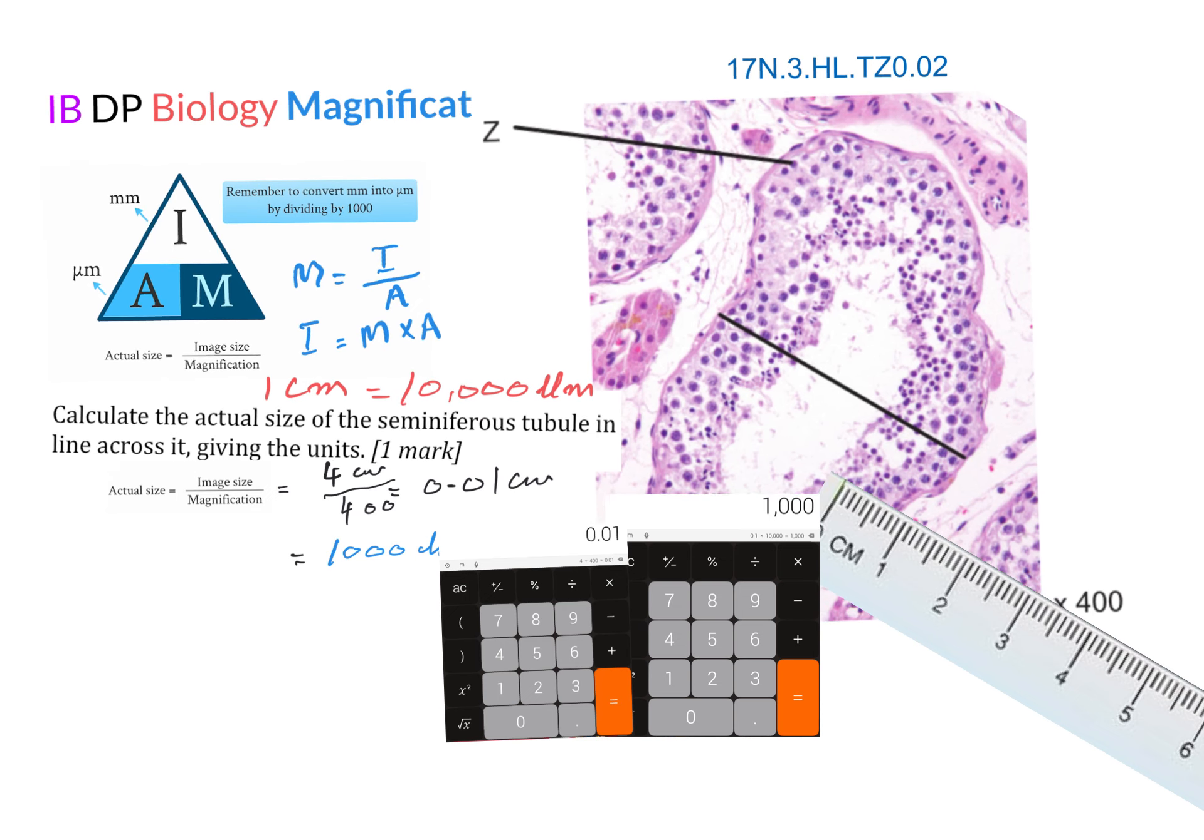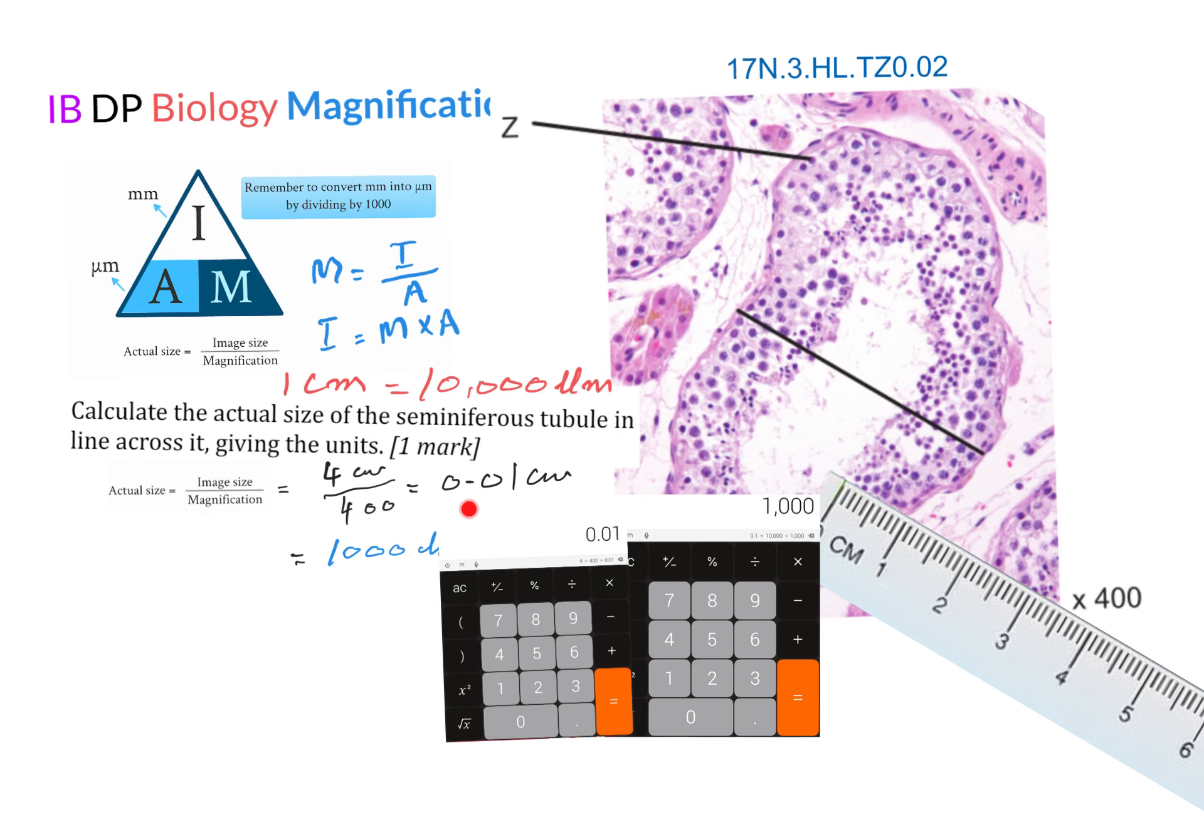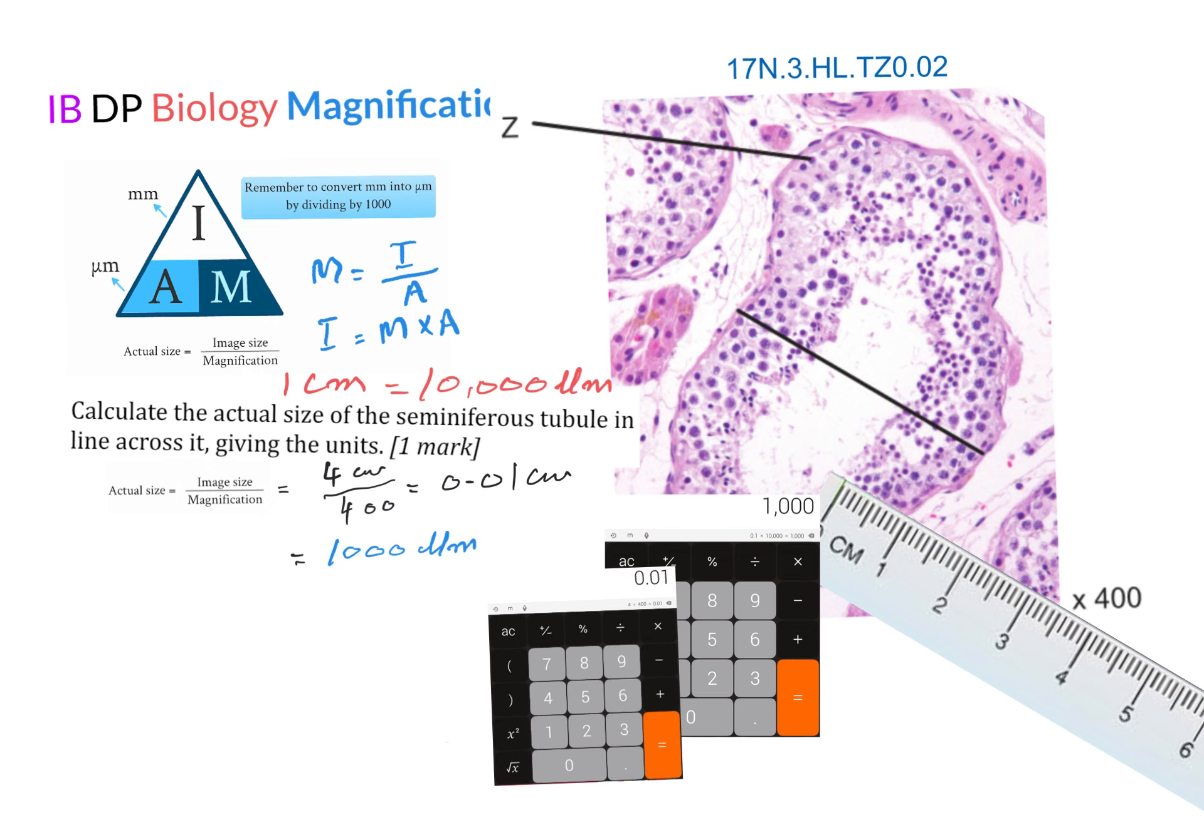No need to convert the units. Simply just divide the four by 400 and we get the answer 0.01 centimeters. So we can stop our answer here, or if we want, we can convert it into micrometers.